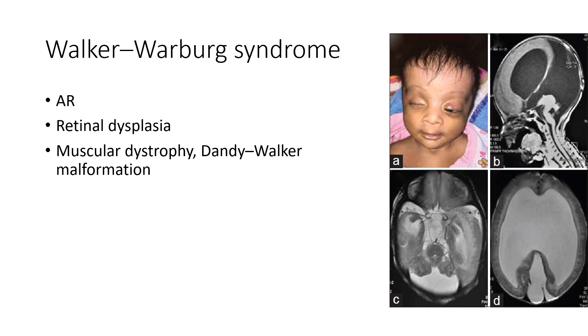Next is Walker-Warburg syndrome. It is an autosomal recessive condition characterized by retinal dysplasia, muscular dystrophy, and Dandy-Walker malformation, as depicted in this neuroimaging.